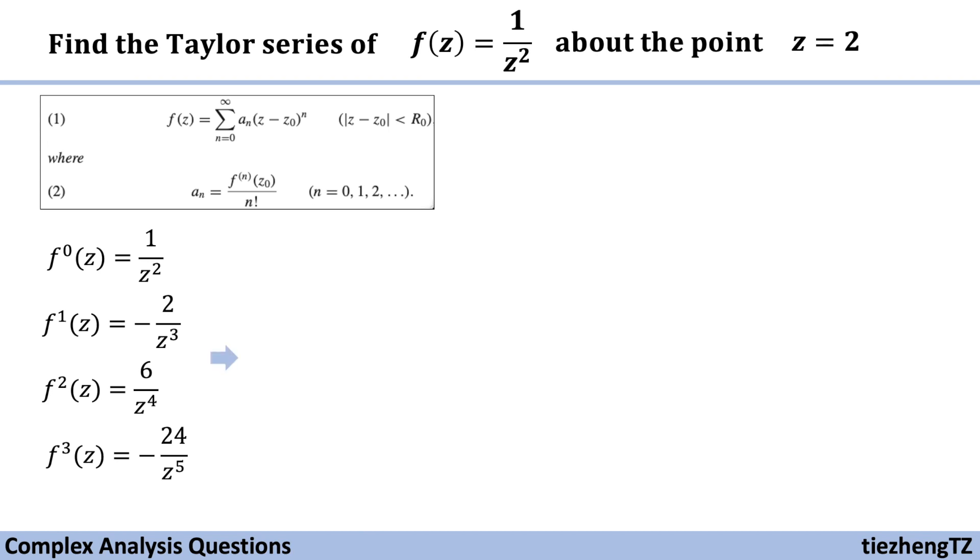Therefore, we can write down this general form of the nth derivative of f(z), which is (-1)ⁿ times (n+1)! over z^(n+2). And of course, we can just substitute n using 0, 1, 2, 3 to see if our general form of nth derivative of f(z) is correct to check that.